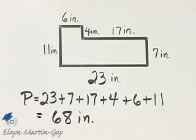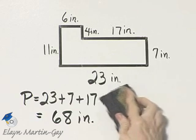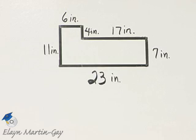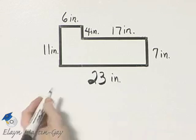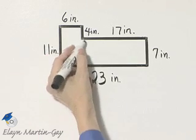Now let's find the area, and that will be the area enclosed. To find the area, I'm going to divide this into two rectangles.